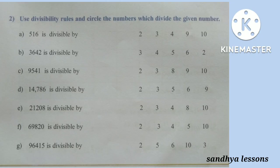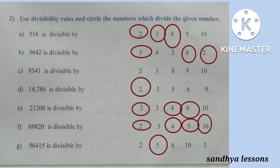Second Roman: Use divisibility rules and circle the numbers which divide the given number. 516 is divisible by 2, 3, and 4. 3,642 is divisible by 2, 3, and 6. 9,541 is not divisible by any of the given numbers. 14,786 is divisible by 2. 21,208 is divisible by 2, 4, and 8. 69,820 is divisible by 2, 4, 5, and 10. 96,415 is divisible by 5.